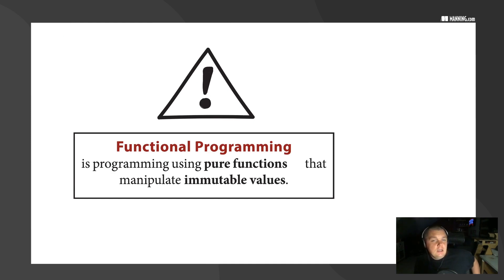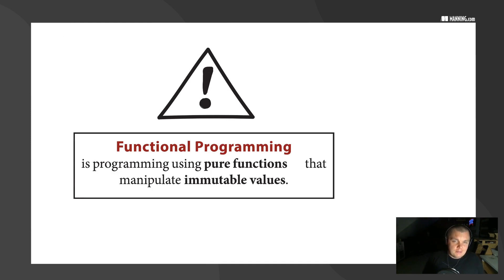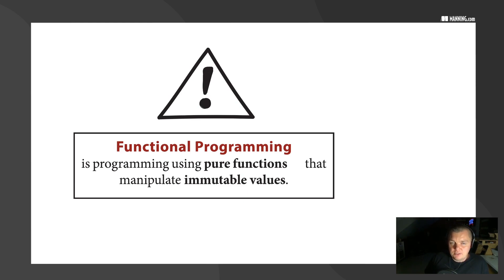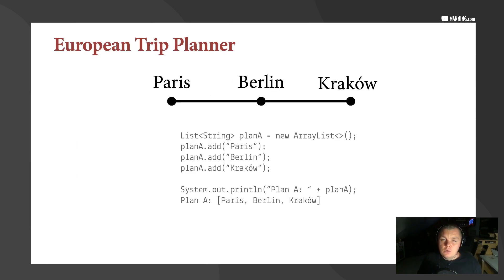Functional programming is programming using pure functions that manipulate immutable values. Those are the two things that make up functional programming: pure functions and immutable values.